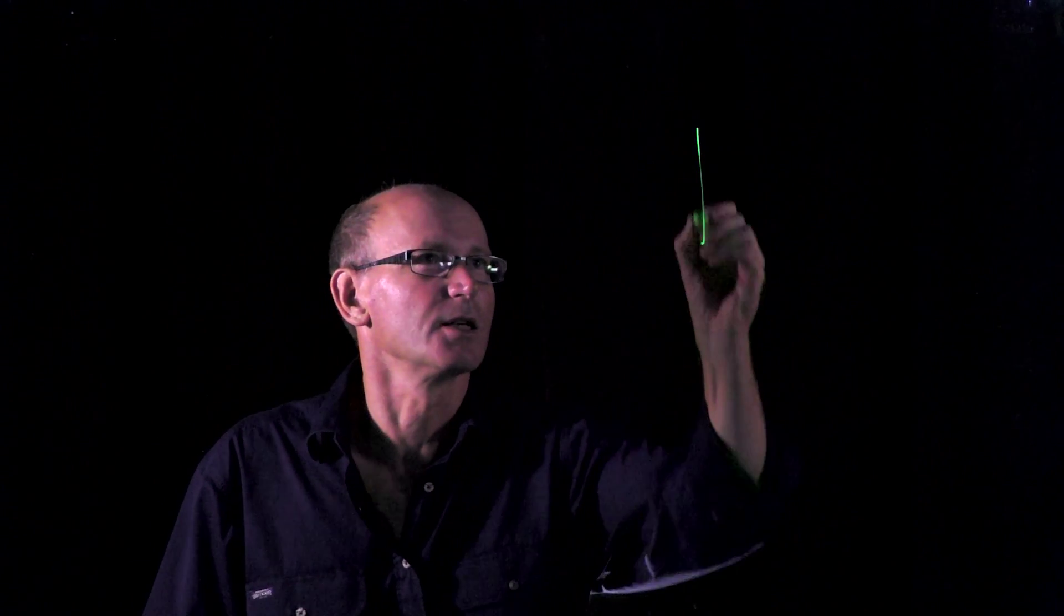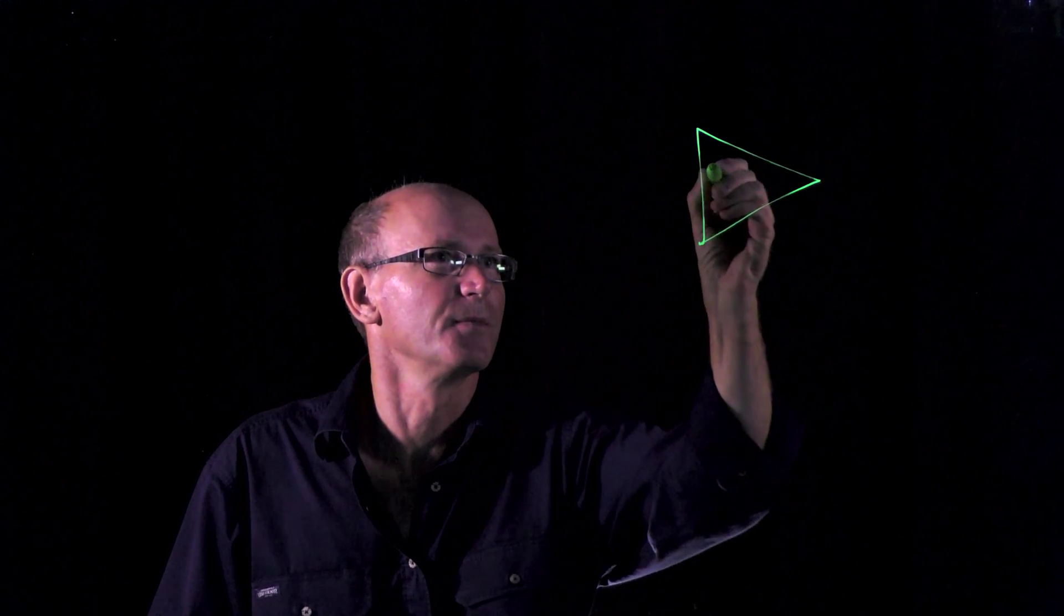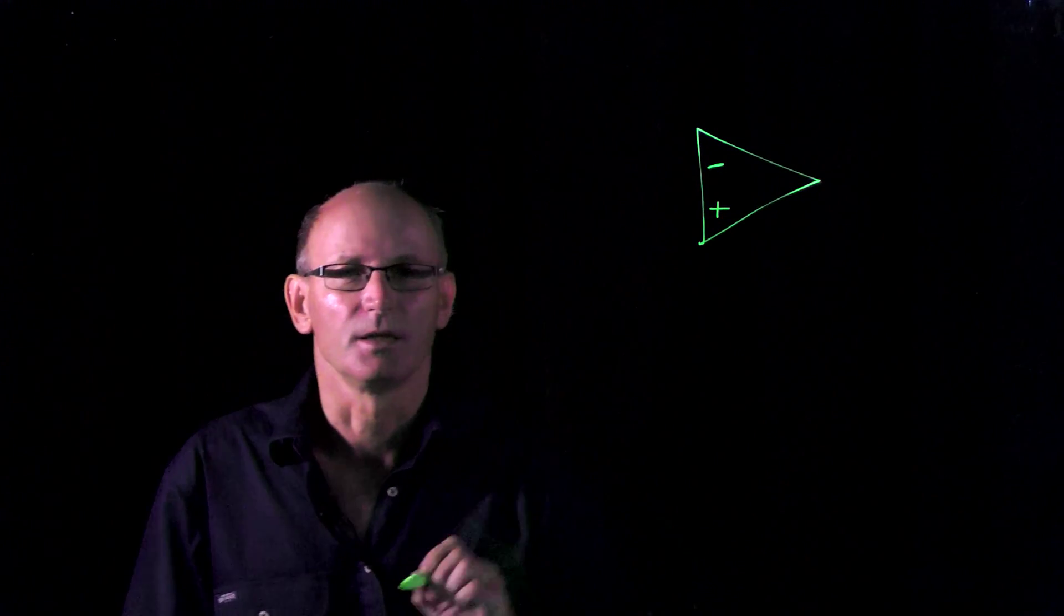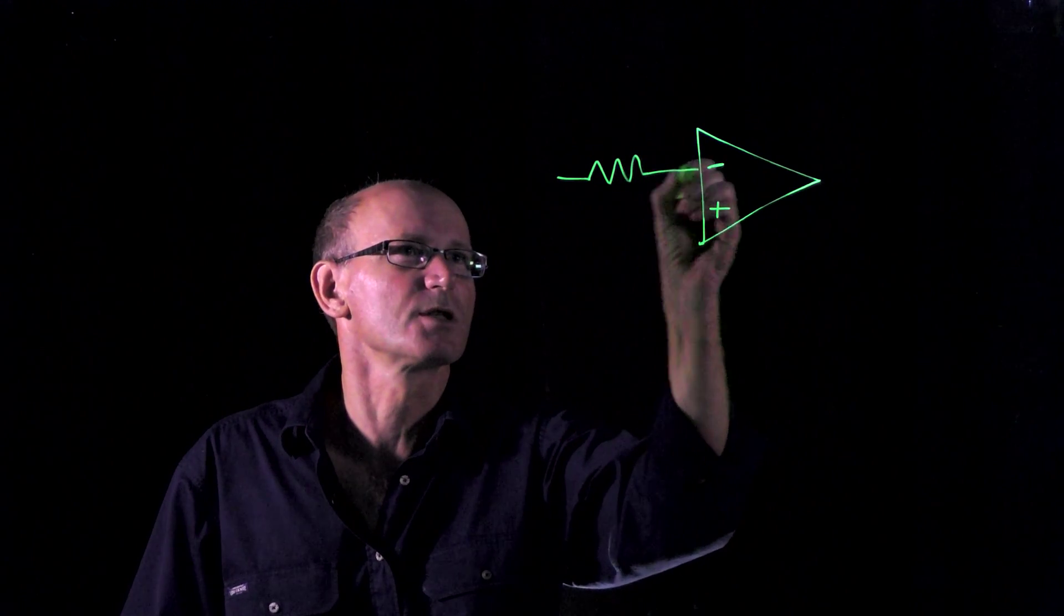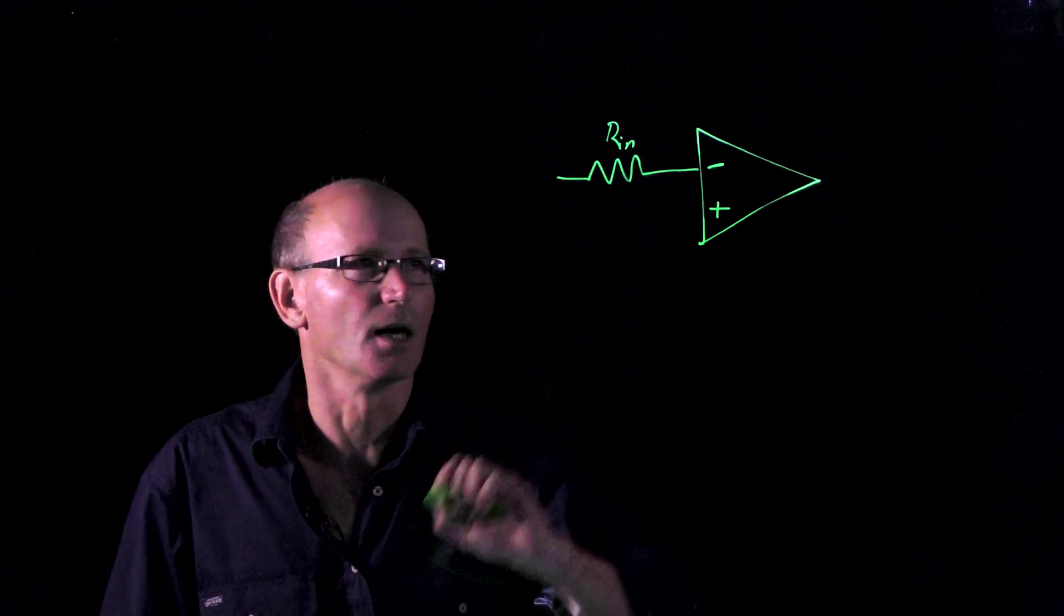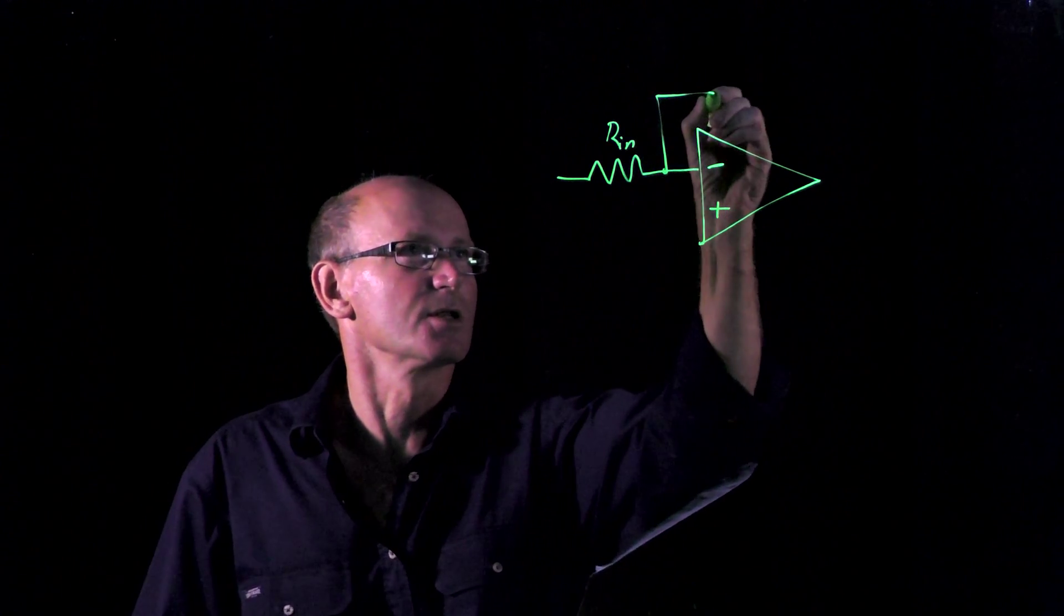Let's start with our ideal operational amplifier. In the inverting amplifier we have an input resistor. Let's designate that R in and a feedback resistance.